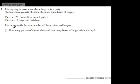In the first part of the question it asks how many packets of cheese slices and how many boxes of burgers does she buy? I think what it wants us to do is simply look at the lowest common multiple. So if we look at the lowest common multiple of 20 and 12, that's going to give us 60.